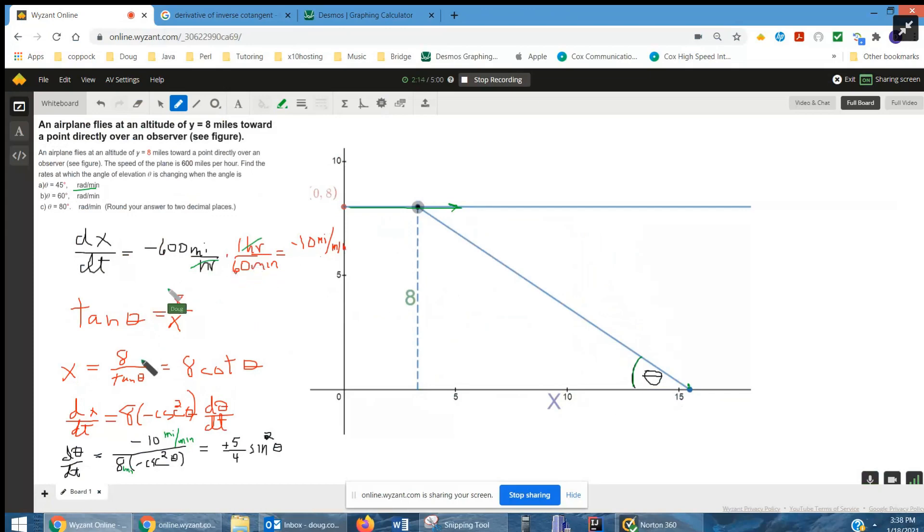The derivative of x with respect to t equals 8 times the derivative of cotangent is negative cosecant squared. And then the derivative of the inside by the chain rule is d theta dt. And this is what I want to solve for.